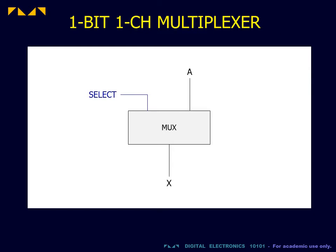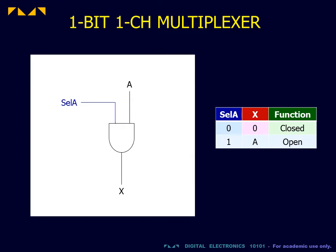We now consider how to construct a multiplexer from basic gates. The simplest multiplexer is a single-bit, single-channel multiplexer that opens when the control input is 1, and closes the channel when the control input is 0. This is achieved using a single AND gate. The control input can be called select A. When select A is 0, the output channel is 0 and the channel is closed. When select A is 1, the output channel is equal to the input channel, and the channel is open.